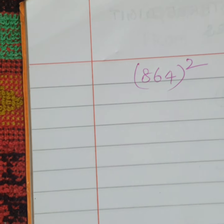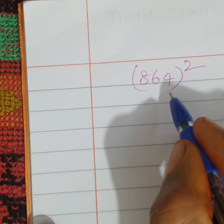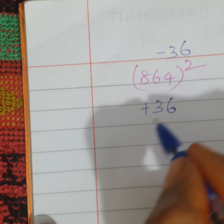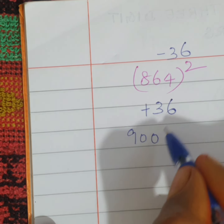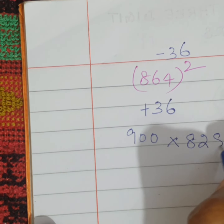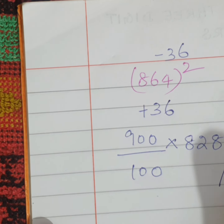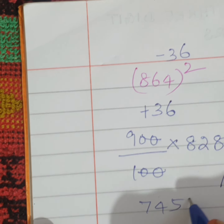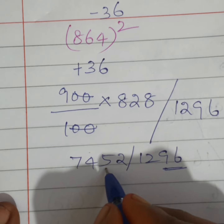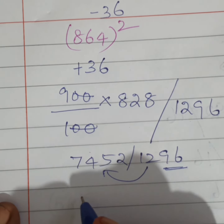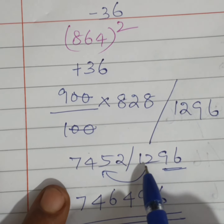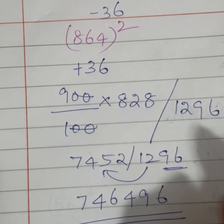864 square. Here we can make it 900 by adding 36: plus 36 above and minus 36. 864 plus 36 is 900, 864 minus 36 is 828, divided by 100, and 36 square is 1296. 9 into 828 is 7452, slash 1296. Since we divided by 100, consider only 2 digits, so 12 is a carryover. Adding 12 to 52: 5 plus 1 is 6, 2 plus 2 is 4. The answer is 746496.